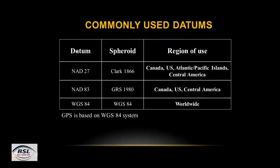Commonly used datums include NAD 27, NAD 83, and WGS 84. The latest and most widely used is WGS 84, established in 1984. It is used worldwide because most devices — including mobile phones and GPS units — are based on the WGS 84 World Geodetic System.